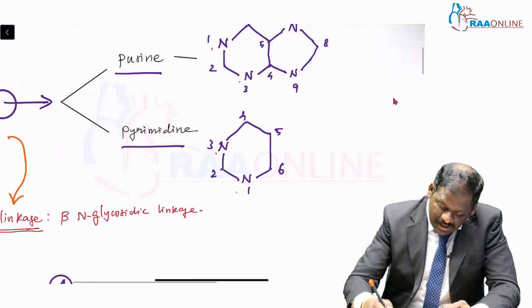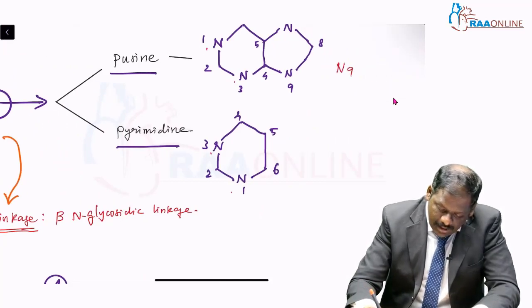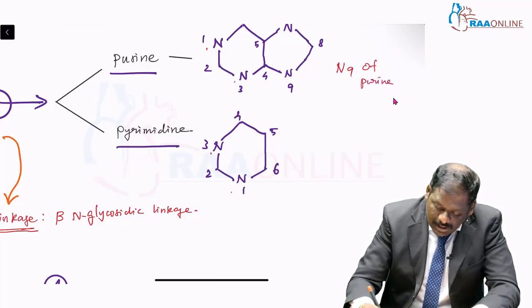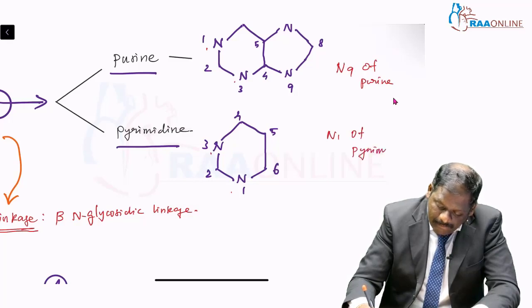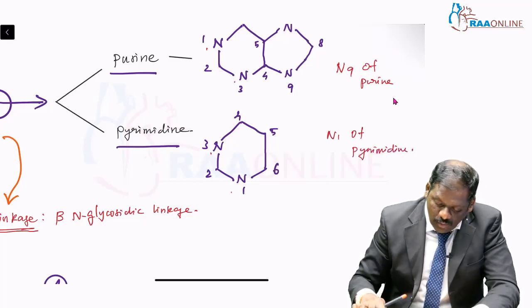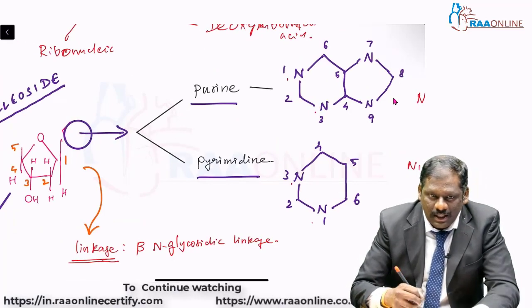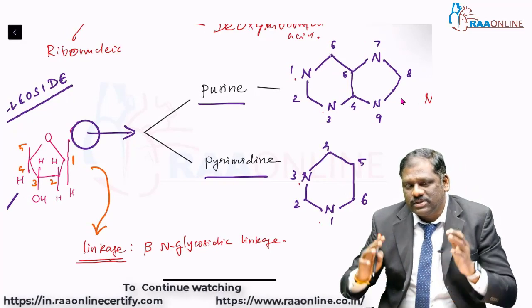If that is a purine, it could be N9. N9 of purine and N1 of your pyrimidine is going to get attached to the first position here by beta N-glycosidic linkage.